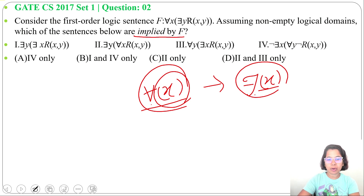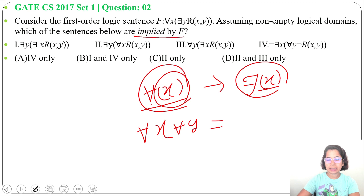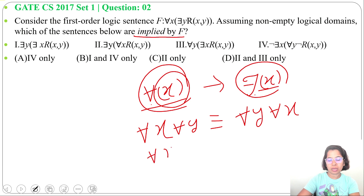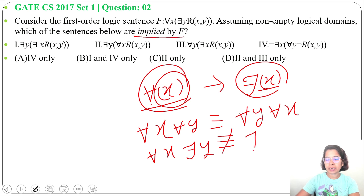If both quantifiers are the same — like for all X, for all Y — we can switch them. This is equivalent to for all Y, for all X. But if we have for all X, there exist Y, this is not equivalent to there exist Y, for all X.